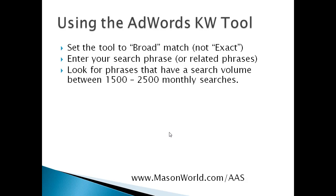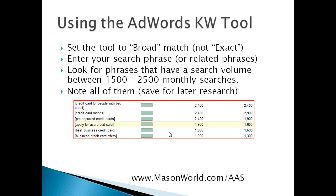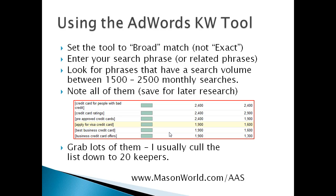Look for phrases that have a search volume between 1,500 and 2,500 monthly searches — something searched about 50 to 100 times a day. Note all of them, because there may be many and we're going to do some additional research to further screen them. You want to grab lots of them because we're going to cull them down based on competition.